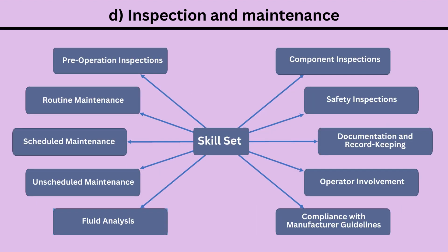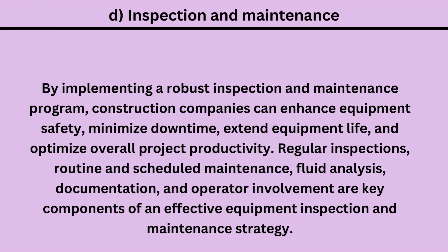More information about construction equipment inspection and maintenance can be found here: 1. Pre-Operation Inspections, 2. Routine Maintenance, 3. Scheduled Maintenance, 4. Unscheduled Maintenance, 5. Fluid Analysis, 6. Component Inspections, 7. Safety Inspections, 8. Documentation and Record Keeping, 9. Operator Involvement, 10. Compliance with Manufacturer Guidelines. By implementing a robust inspection and maintenance program, construction companies can enhance equipment safety, minimize downtime, extend equipment life, and optimize overall project productivity. Regular inspections, routine and scheduled maintenance, fluid analysis, documentation, and operator involvement are key components of an effective equipment inspection and maintenance strategy.